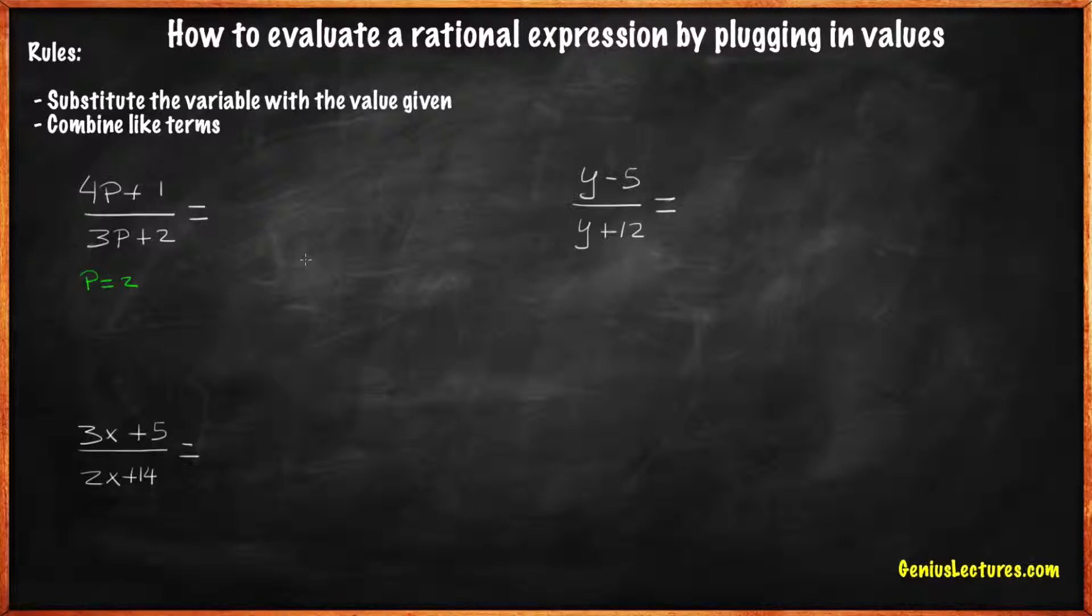Here, we just need to replace p with 2. 4 times 2 plus 1 over 3 times 2 plus 2 equals 8 plus 1 over 6 plus 2 equals 9 over 8.